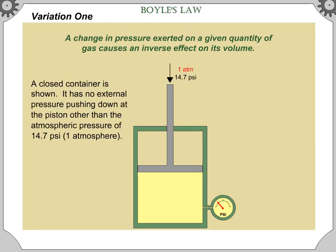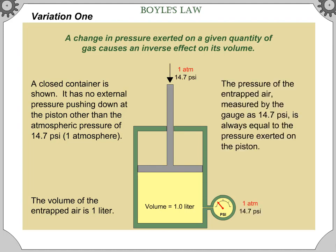A closed container is shown. It has no external pressure pushing down at the piston other than the atmospheric pressure of 14.7 psi or 1 atmosphere. The volume of the entrapped air is 1 liter. The pressure of the entrapped air, measured by the gauge as 14.7 psi, is always equal to the pressure exerted on the piston.